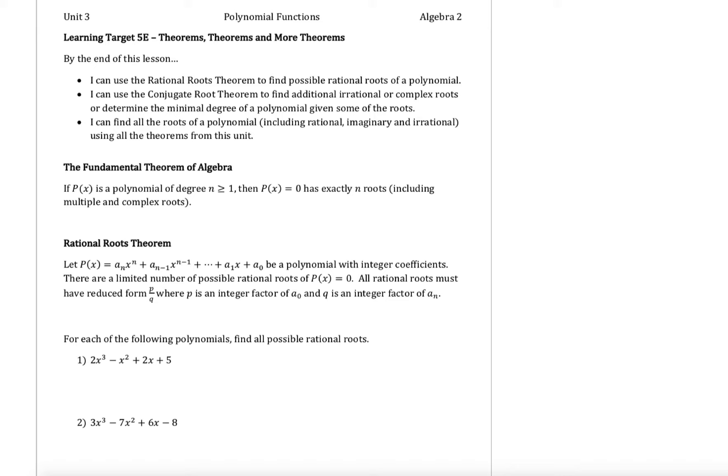The first thing we're going to look at is something we've already talked about before — we just haven't given it a name. It's something I've been hinting at in each one of these sections, and that is the fundamental theorem of algebra. The fundamental theorem of algebra says: if p(x) is a polynomial of degree n greater than or equal to one, then p(x) = 0 has exactly n roots, including multiple and complex roots.